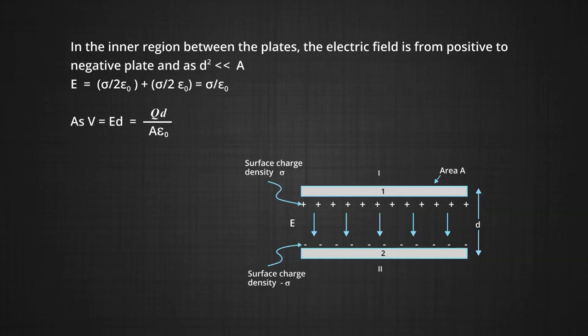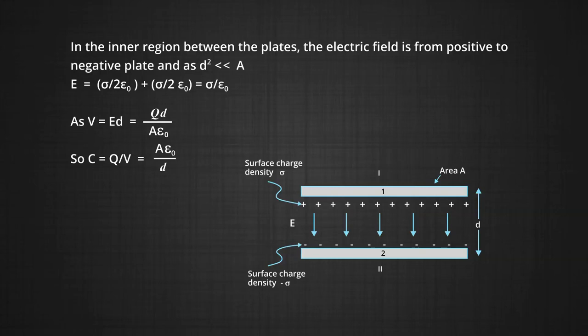As we know, the potential difference V is equal to the electric field E multiplied by the distance between the plates D, which is equal to Q times D divided by A times epsilon naught. And now we can find out the capacitance, which is given by the formula C is equal to the charge Q given to the capacitor divided by the potential V to which it is raised. That is, C is equal to Q by V, which is equal to A epsilon naught upon D.